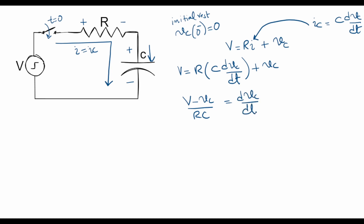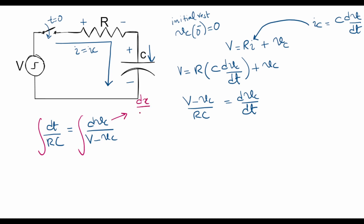This equation can be rearranged as (V minus VC) divided by RC equals dVC/dt, which can be written as dt/RC equals dVC divided by (V minus VC). If we take the integral on both sides, the integral of dx/x equals ln(x), so adding a minus sign, minus dVC over (V minus VC) is of the form dx/x. The integral of dt gives T/RC plus an integration constant K, equal to minus ln(V minus VC). Let's call this equation number one.